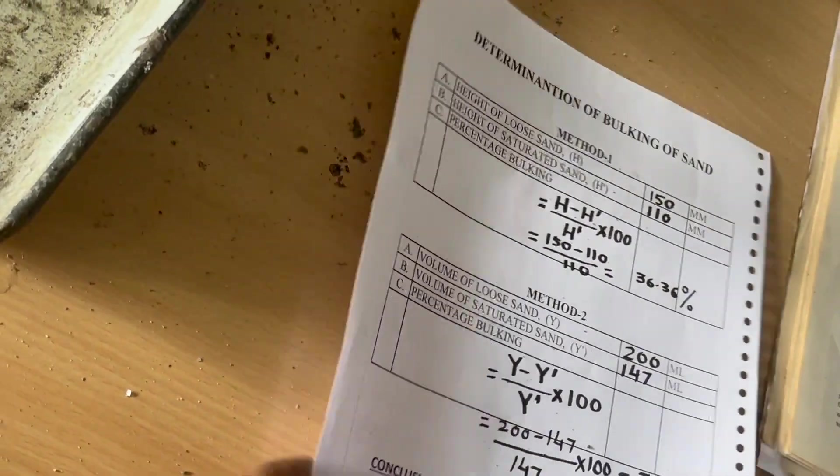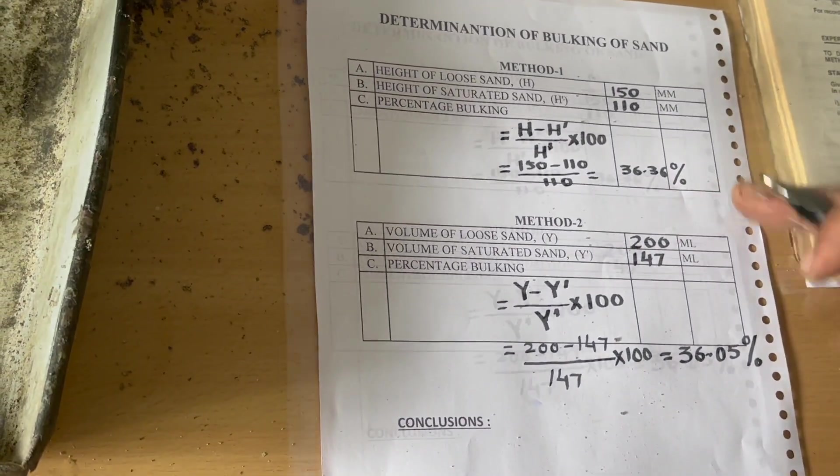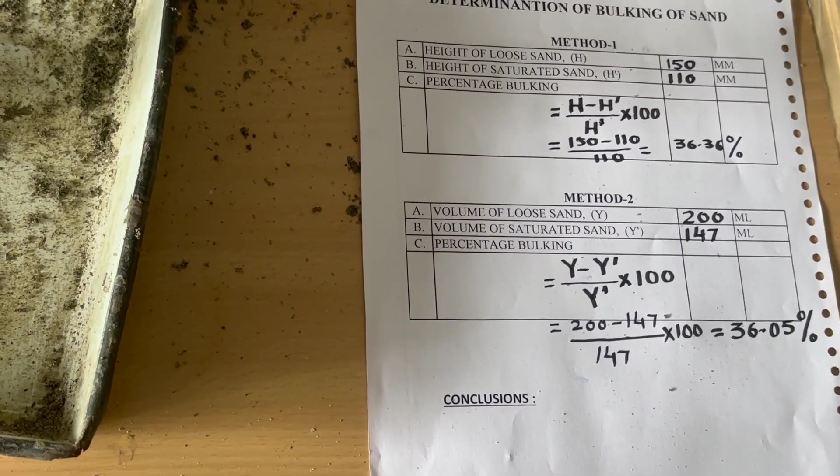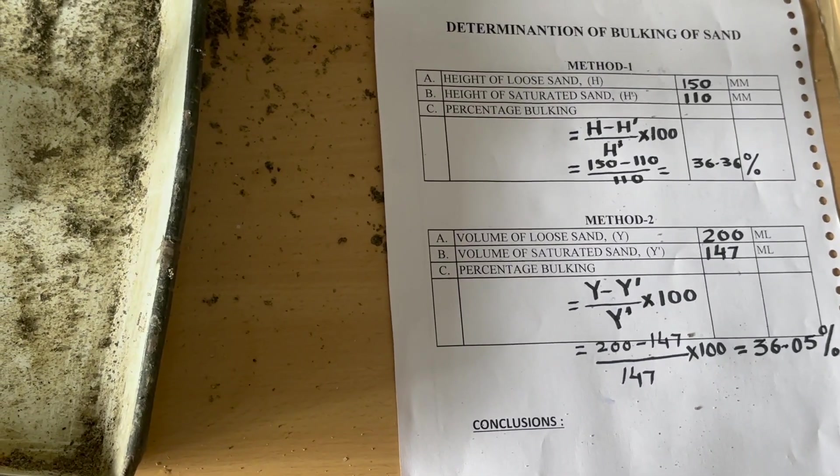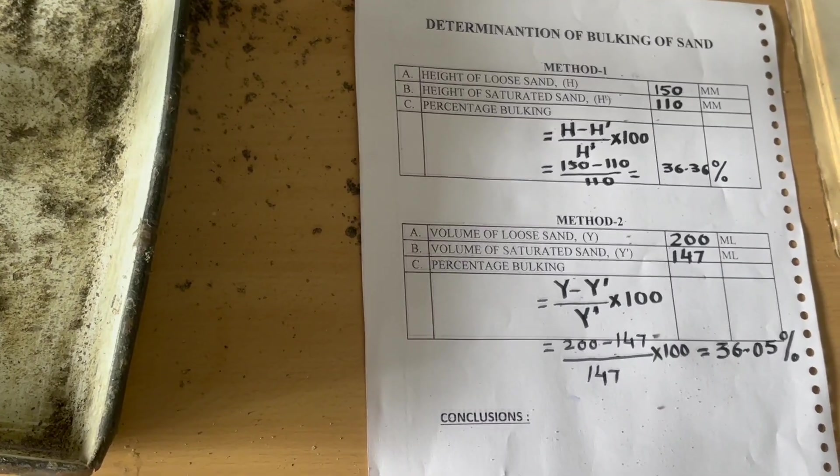So in the same sample, we did it with the first method that comes to 36.36. There is a minor difference. So we can say roughly 36 percent is the bulking of sand due to the presence of moisture in the sand sample.